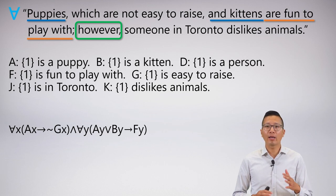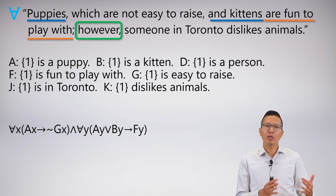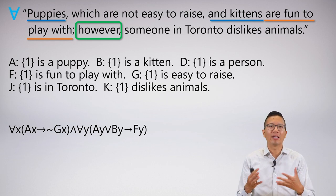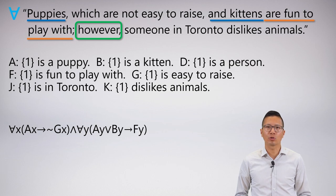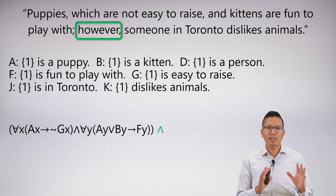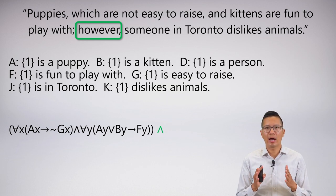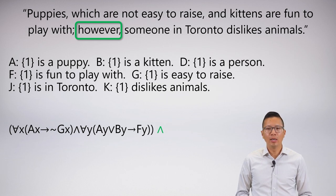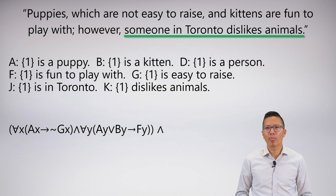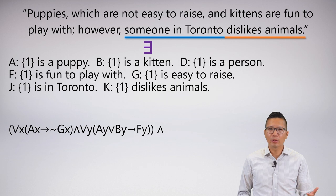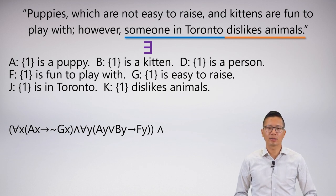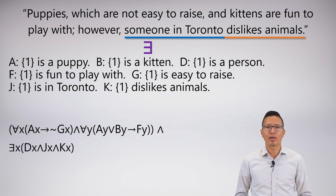Notice that I used the variable letter Y here. I could have used X — even though I used X already, because I closed the scope, that X is available again. It doesn't matter. Now the 'however' is on the page with a conjunction. The last thing I need to symbolize is 'someone in Toronto dislikes animals.' I isolate the group and property, and ask: is this all people in Toronto, or some person in Toronto? Clearly it's some, so this is an existential — and I invoke the canonical form: a bunch of conjunctions in a row.